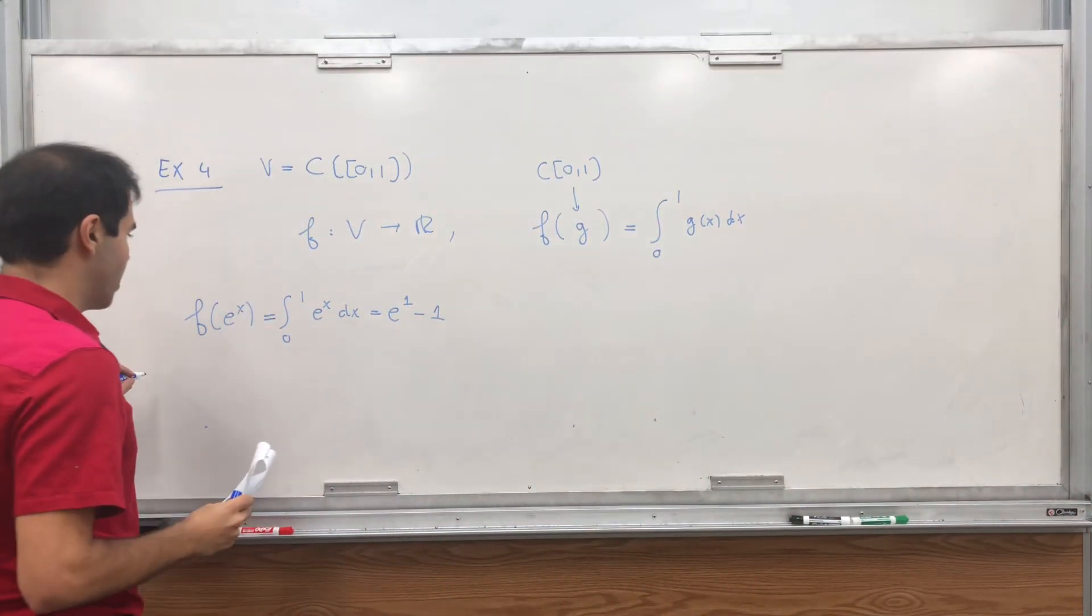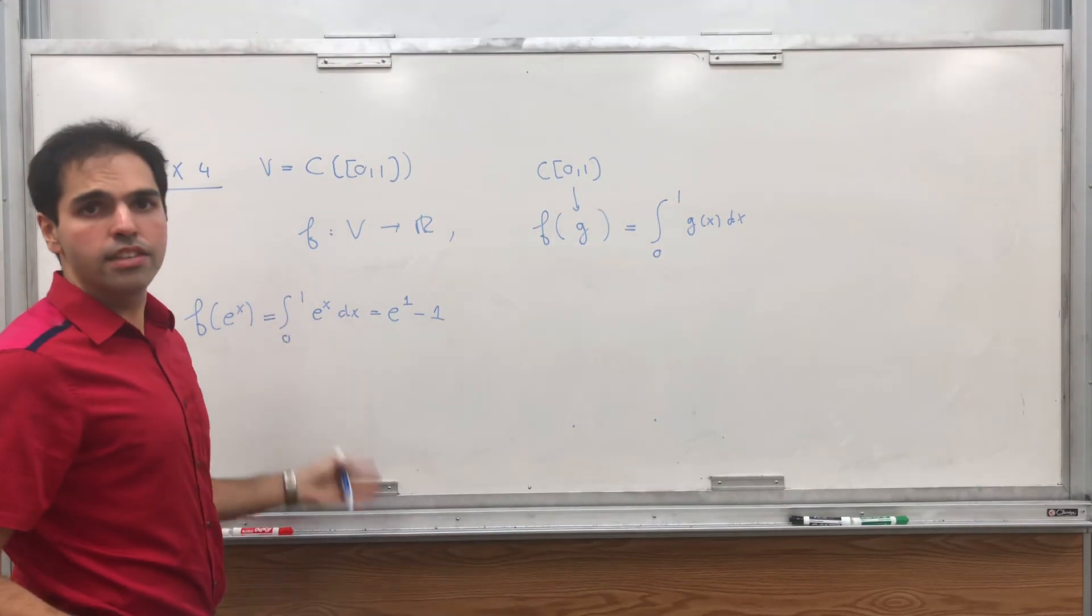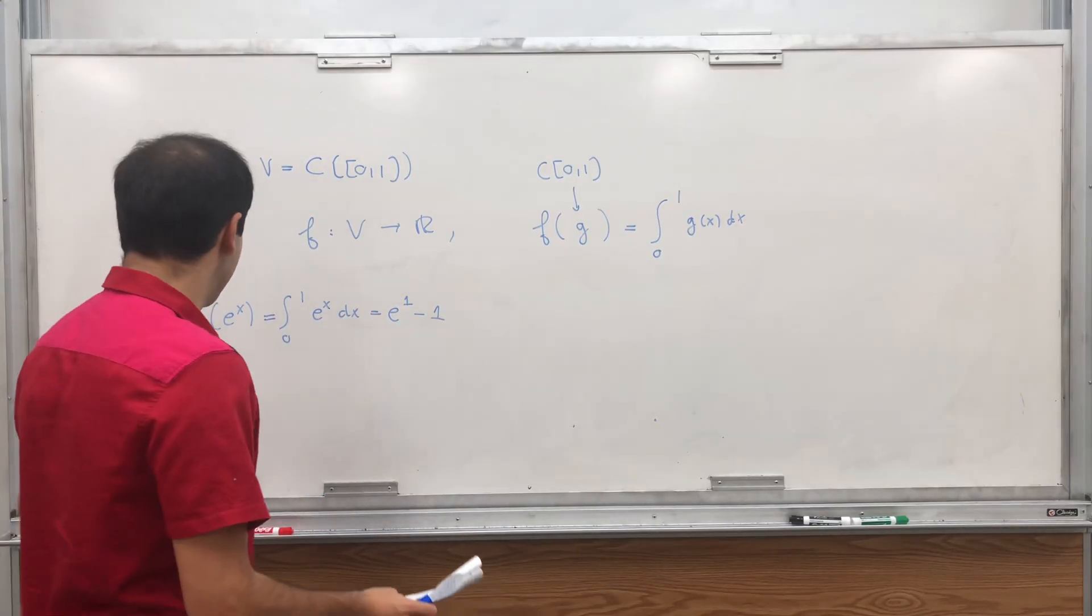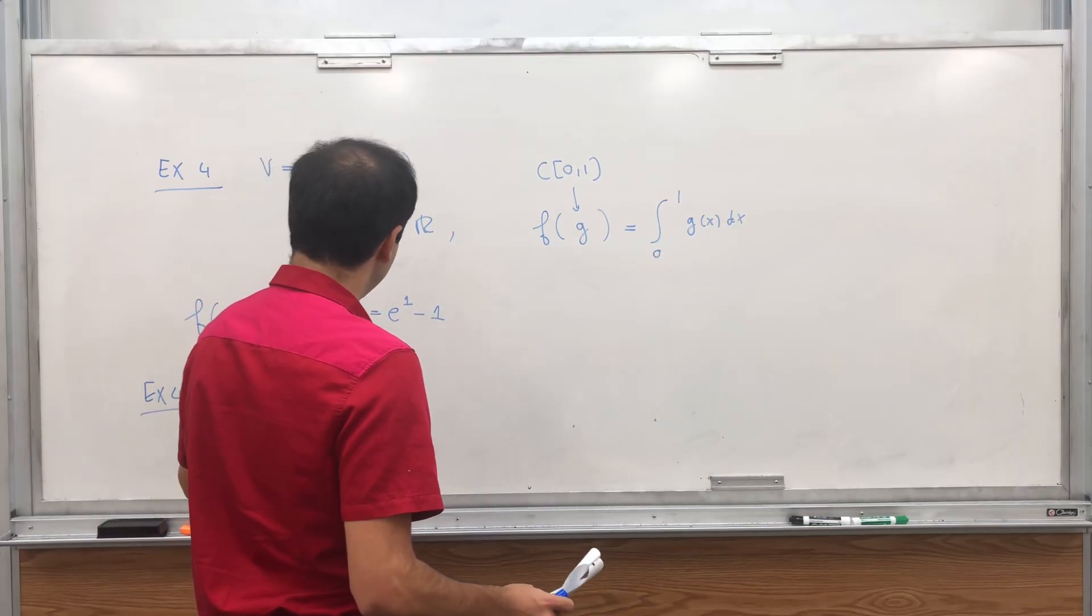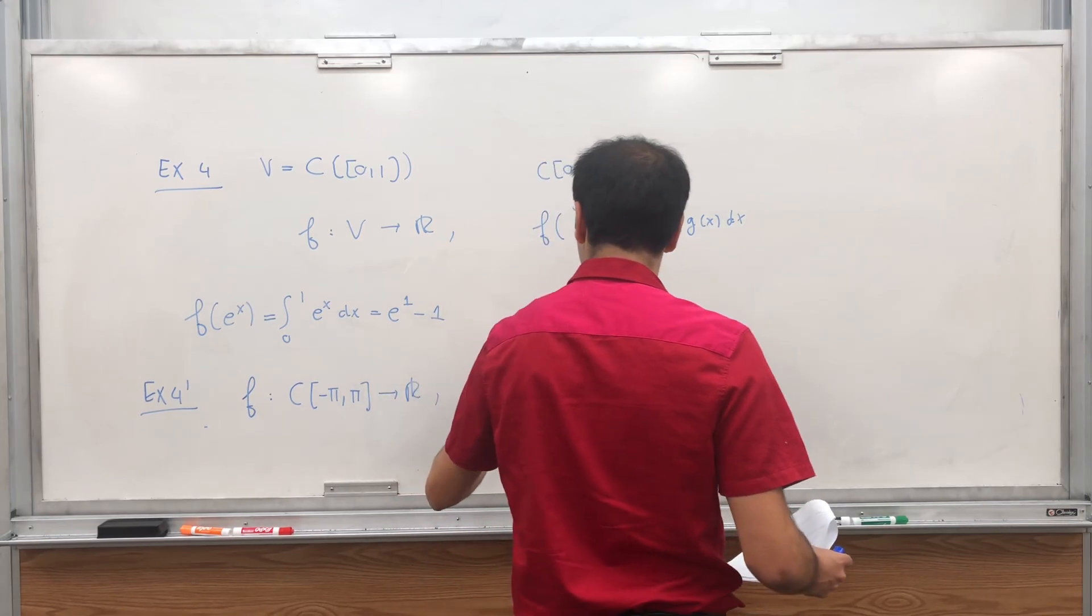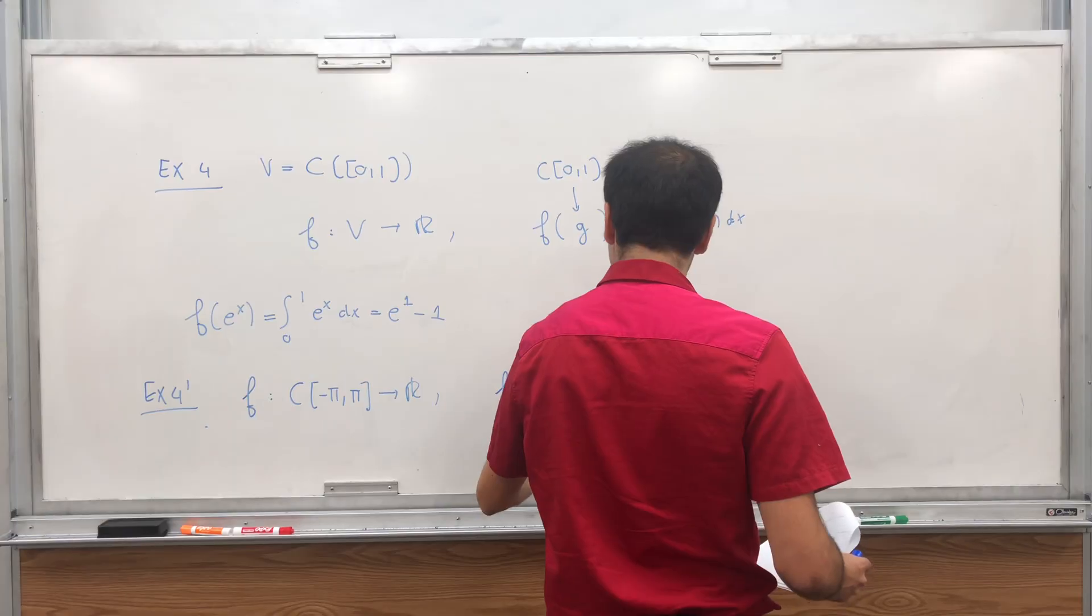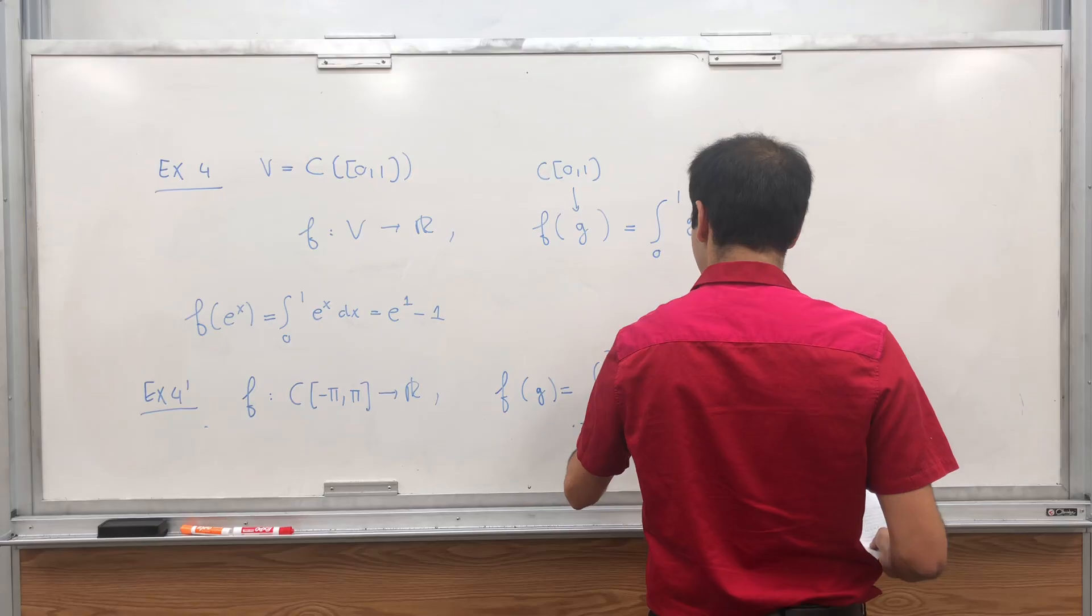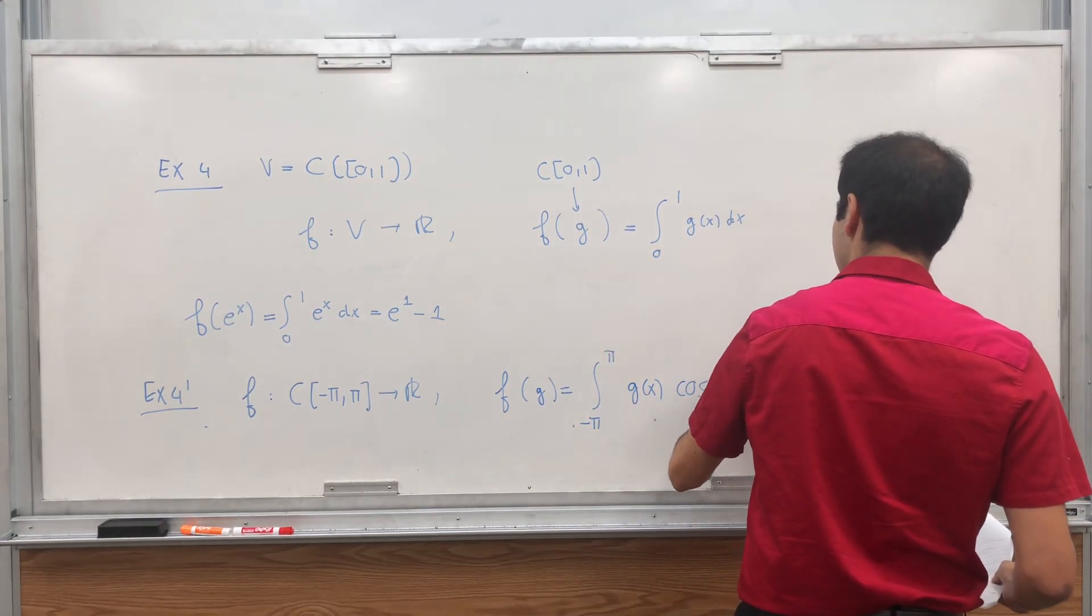And in fact, you can generalize this. So for example, for prime, take again the set of functions, continuous functions from minus pi to pi. And let F map C minus pi to pi to R. And if you want, F of G, it's simply you integrate minus pi to pi of G of x times cosine of 2x dx, let's say divided by pi.